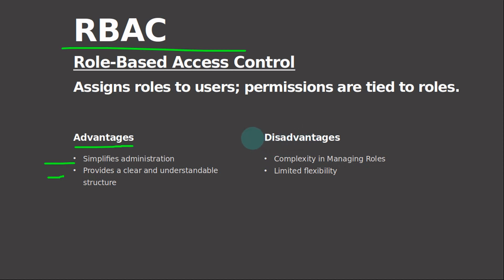Now we move into disadvantages. The first is complexity in managing roles: as the number of roles and permissions increases, managing and maintaining them can become complex, leading to difficulties in ensuring that roles are properly defined, assigned, and updated over time. Limited flexibility is the other disadvantage — RBAC provides access control based on predefined roles, which may not always fit the specific needs of complex applications. This lack of flexibility can result in situations where users require permissions that do not neatly align with any existing roles, leading to workarounds or compromises in security.